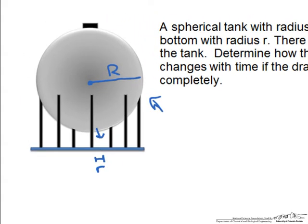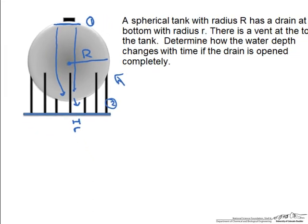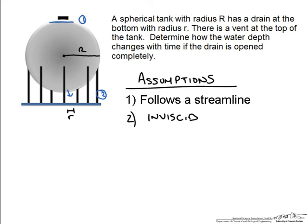When we start any type of problem it is important that we start labeling our diagram. If we say that the water level is initially at the top we will call this point 1, and where it drains is point 2. We assume that the fluid follows some kind of streamline into the drain and out. We also assume that the fluid is inviscid and incompressible.